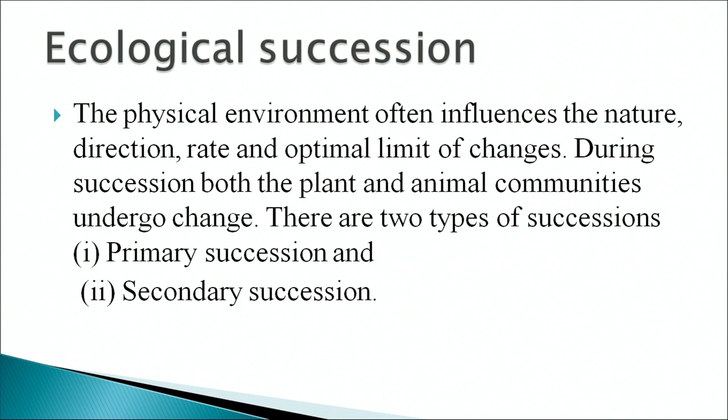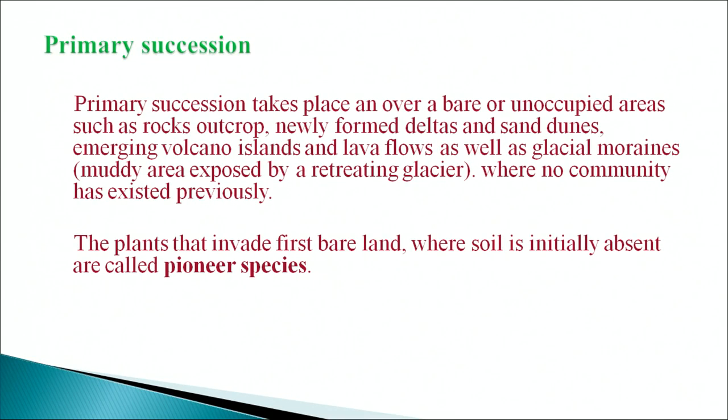During succession, both plant and animal communities undergo change. There are two types of succession: primary succession and secondary succession. Primary succession takes place over bare or unoccupied areas such as rock outcrops, newly formed deltas, sand dunes, emerging volcanoes, islands, glacial moraines, and muddy areas exposed by retreating glaciers where no community has previously existed. The plants that invade first on bare land where soil is initially absent are called pioneer species.